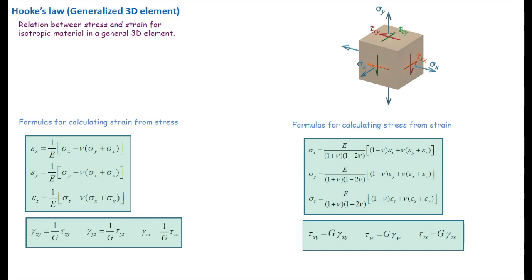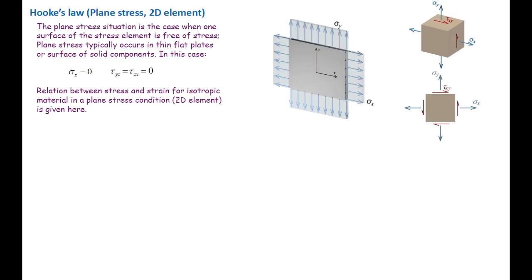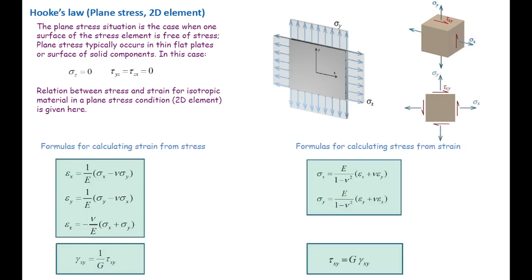This is the case where we have all six independent stresses acting on a three-dimensional element. There are two simpler cases that we generally work with in mechanics of materials. One of them is called the plane stress situation. Consider the case where stress in one direction is zero — in this case, stress in the z direction equals zero, and all shear stresses associated with z are equal to zero. This occurs every time we are working with a free surface, where stress on that free surface is equal to zero. We can then simplify the three-dimensional stress element into a two-dimensional stress element. This is what we call a plane stress situation.